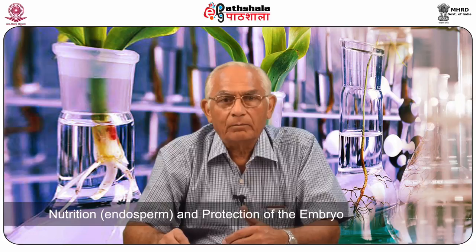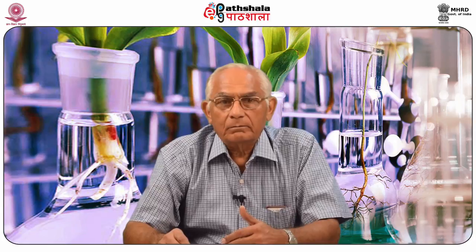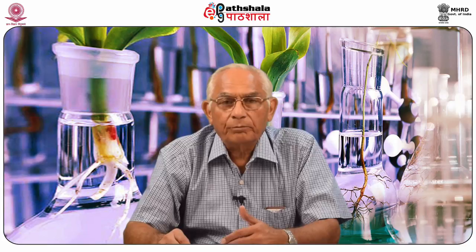The embryo is the most important component of a seed. Other tissues of the seed are subordinate to the embryo — they either serve as a source of nutrition, such as the endosperm tissue, or protection of the embryo, such as the seed coat. The zygote is a product of fertilization, which through a predetermined pattern of cell divisions and development, characteristic of a species, forms an embryo.